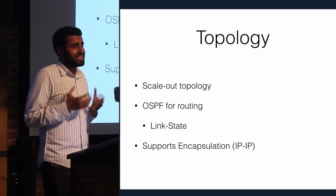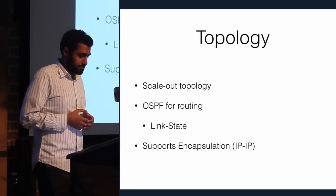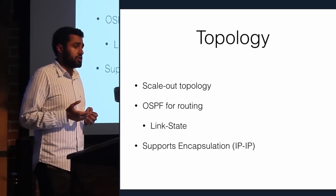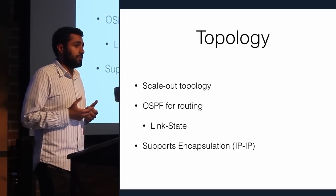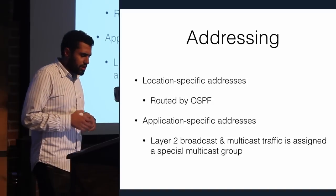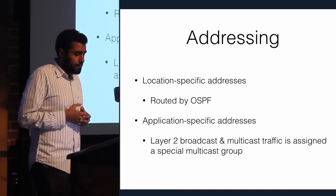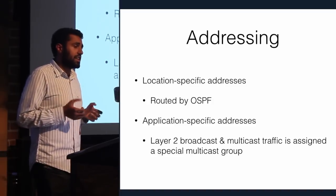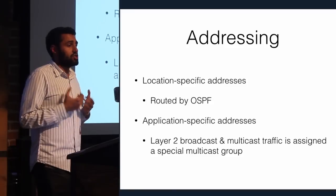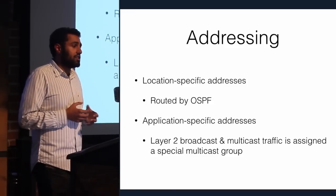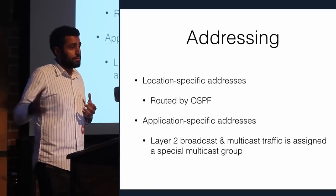The VL2 topology is a scale-out topology as opposed to scale-up — adding devices horizontally rather than buying very large devices. They use OSPF for reconvergence and routing layer three addresses, and their network supports encapsulation, which allows clever things around flow steering and traffic steering. Instead of one canonical address per device, they added two addresses: the LA, designated to a physical device such as an individual switch, and the AA (application address) assigned to servers and devices within VL2, enabling virtualized networks on top of physical networks.